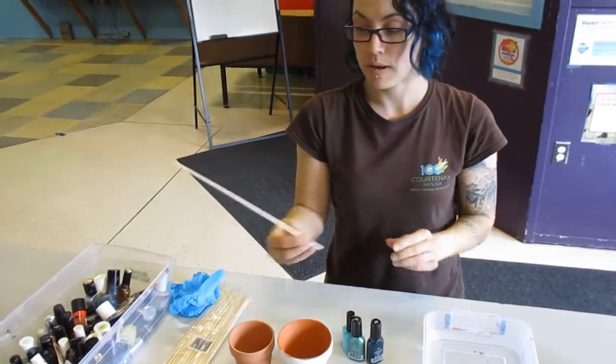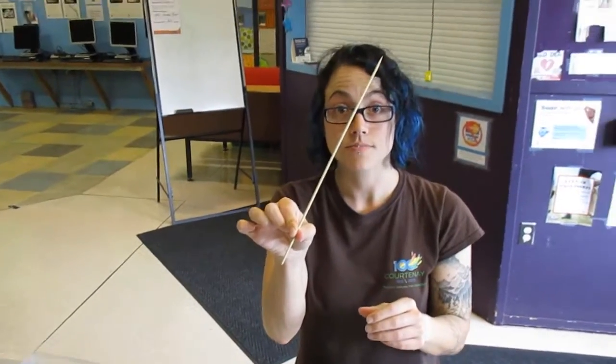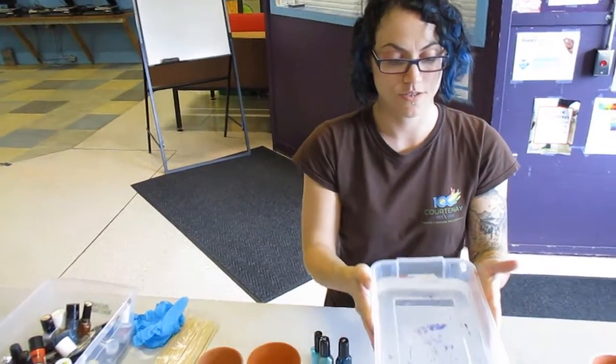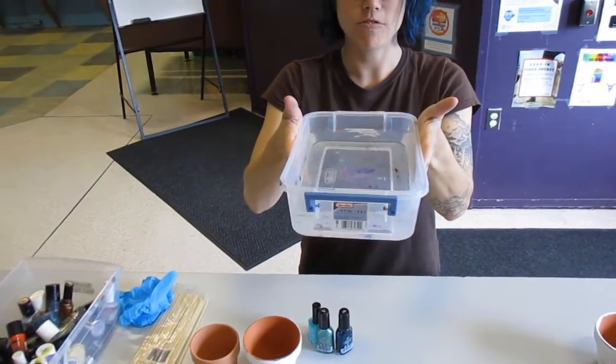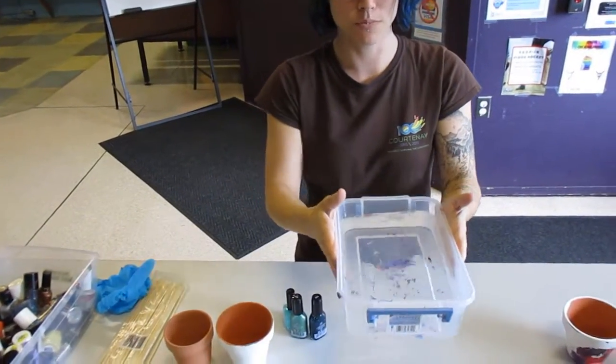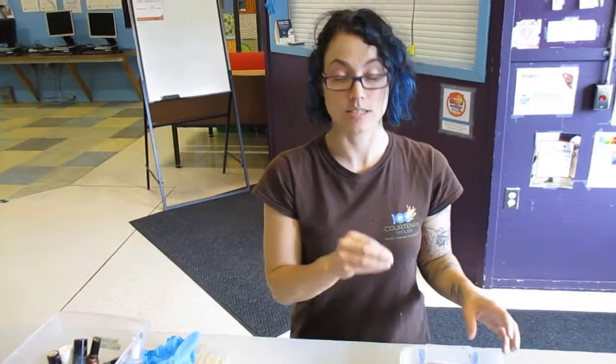A toothpick or skewer stick and then some kind of container filled with room temperature water. Ensure that it's a container that you're not worried about because it will get nail polish stains on it.